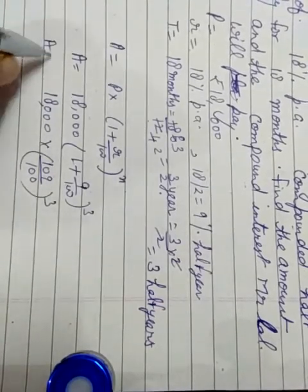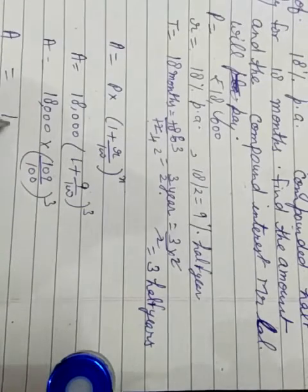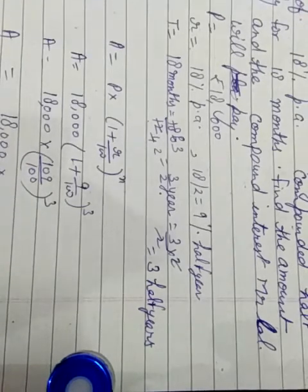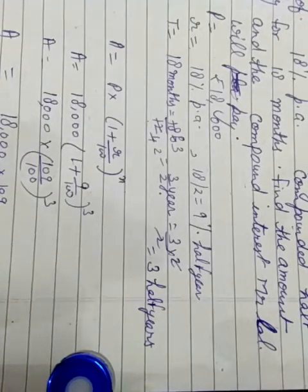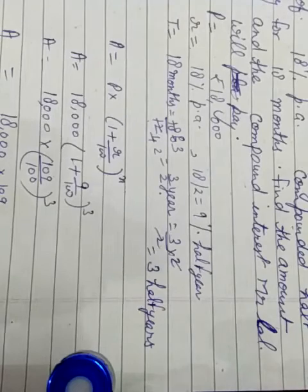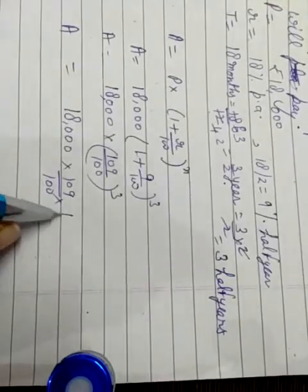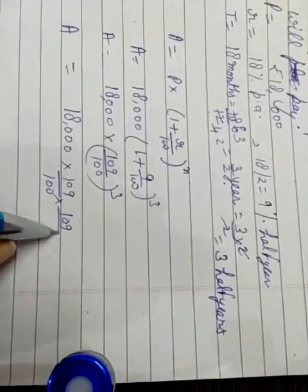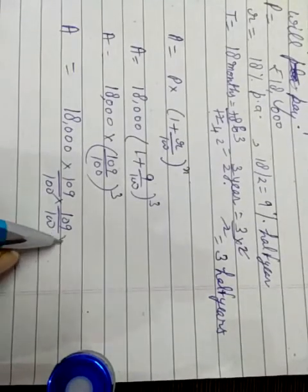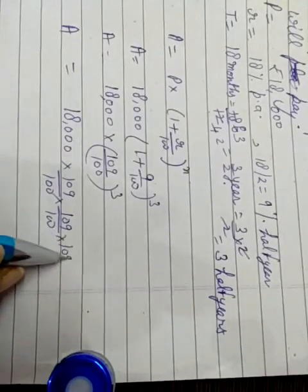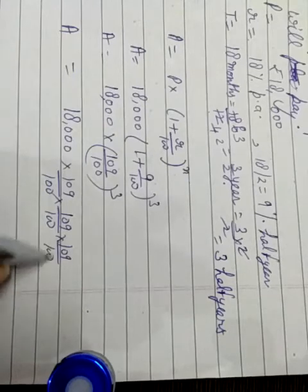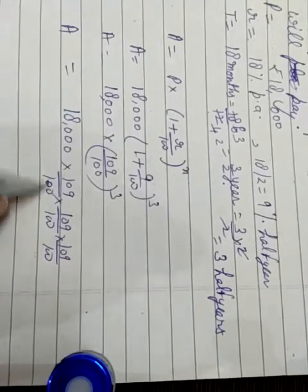A is equal to 18,000 into 109 upon 100, into 109 upon 100, into 109 upon 100.